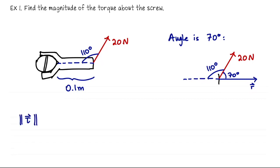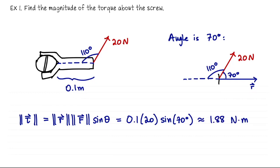So we can say that the magnitude of torque is the magnitude of R times the magnitude of F times sine of the angle between them. But really we want to think about the length of the object being rotated, which is 0.1 meters, times the magnitude of force, which is 20 newtons, times sine of the angle between them, which I'm going to say is sine of 70 degrees. And when you crunch those numbers, you get about 1.88 newton meters.